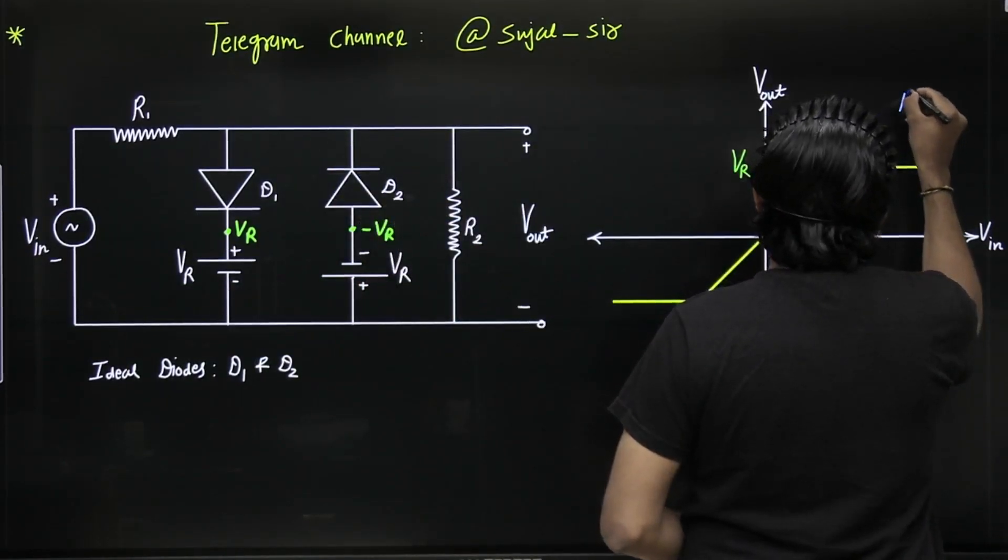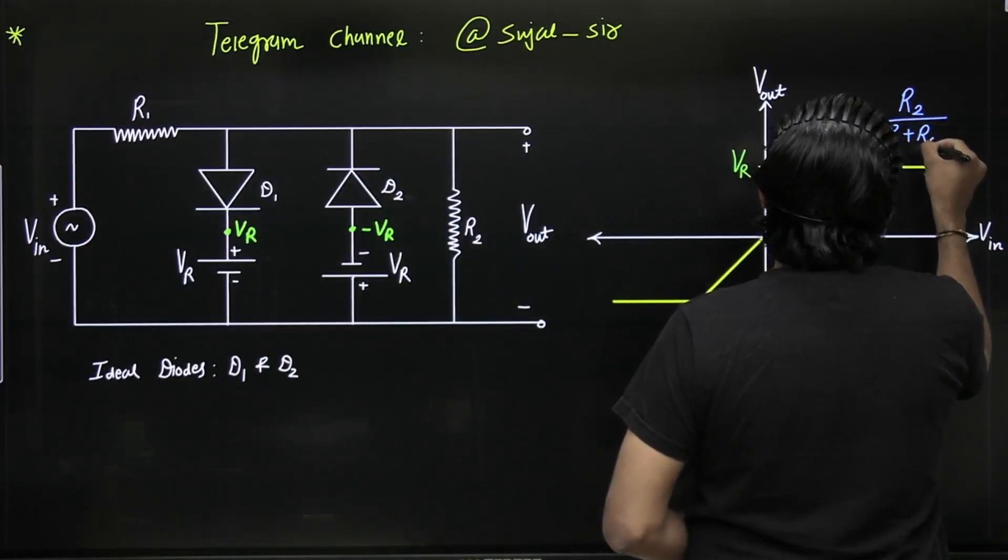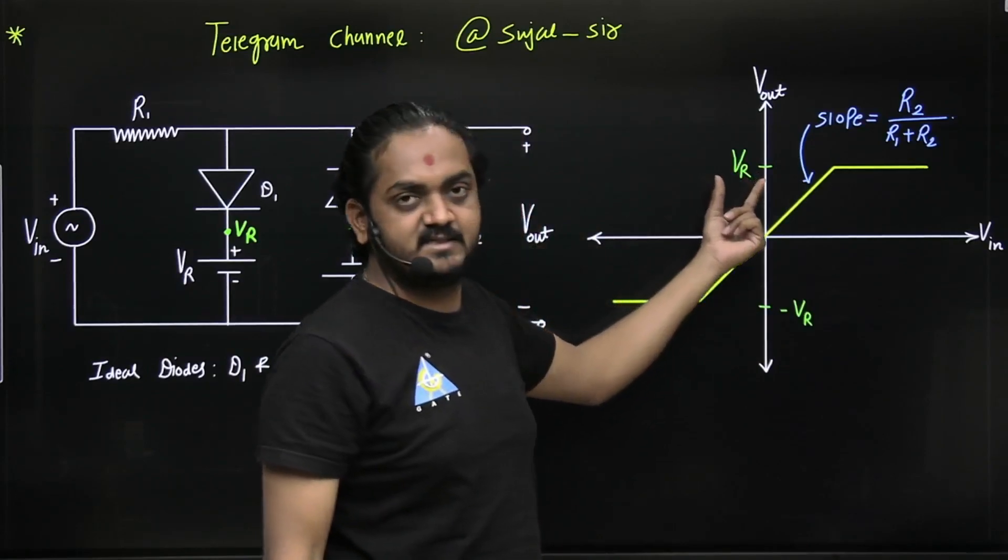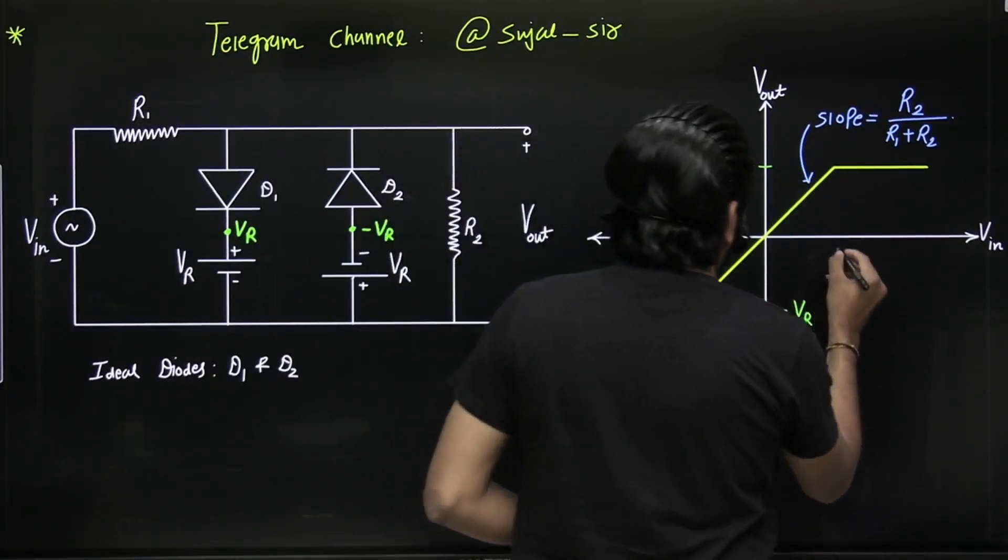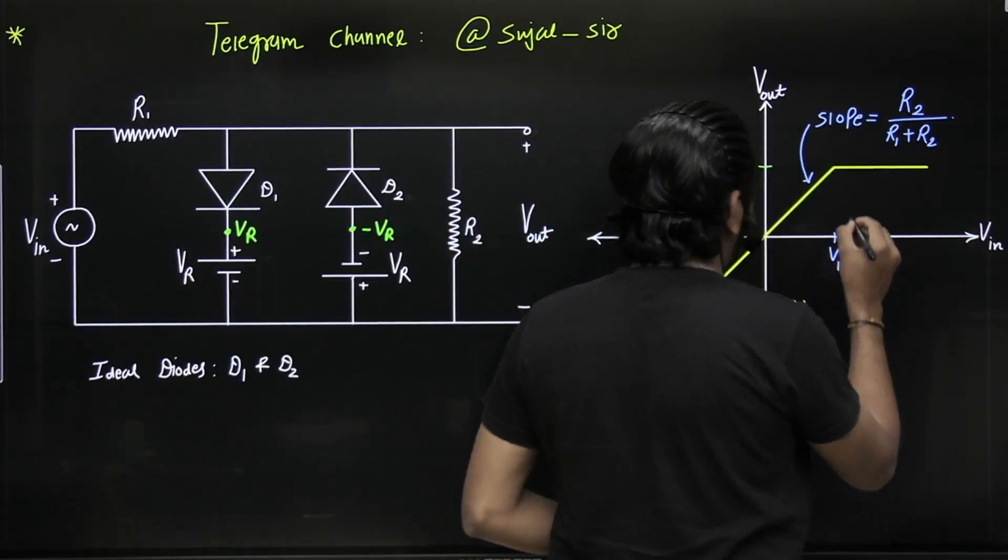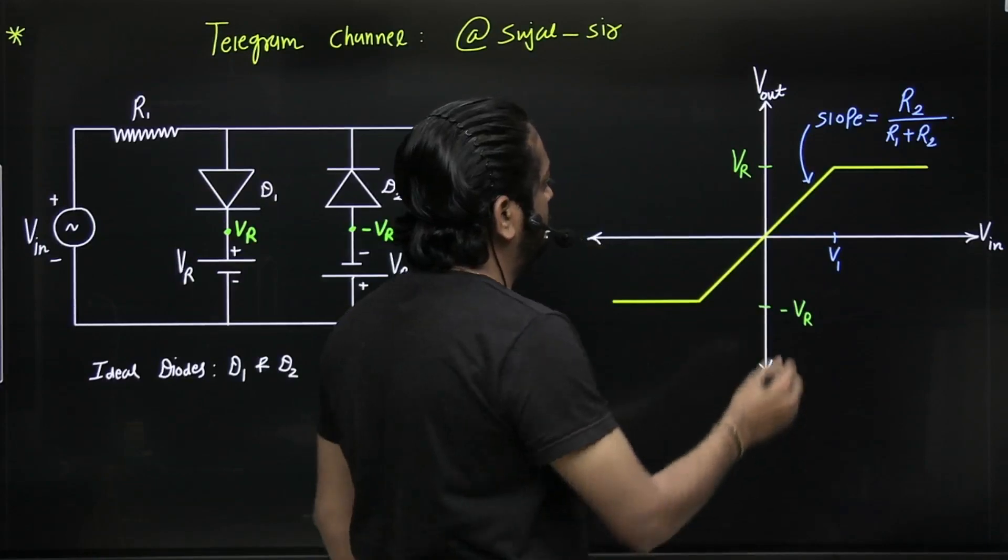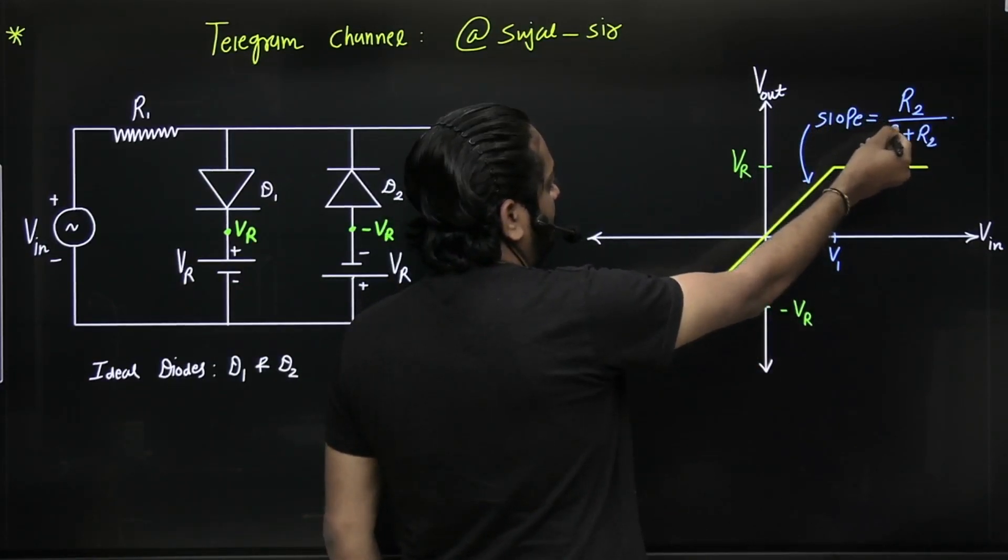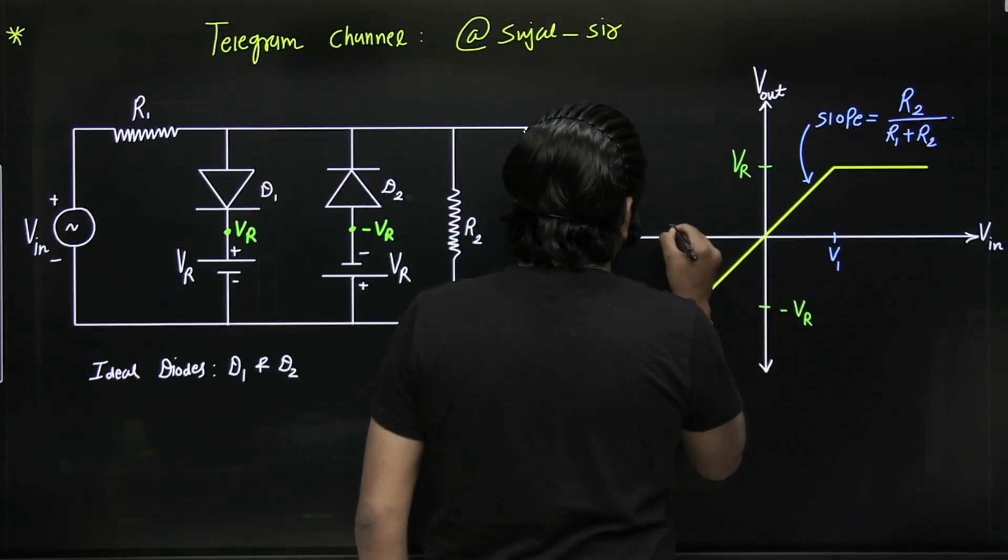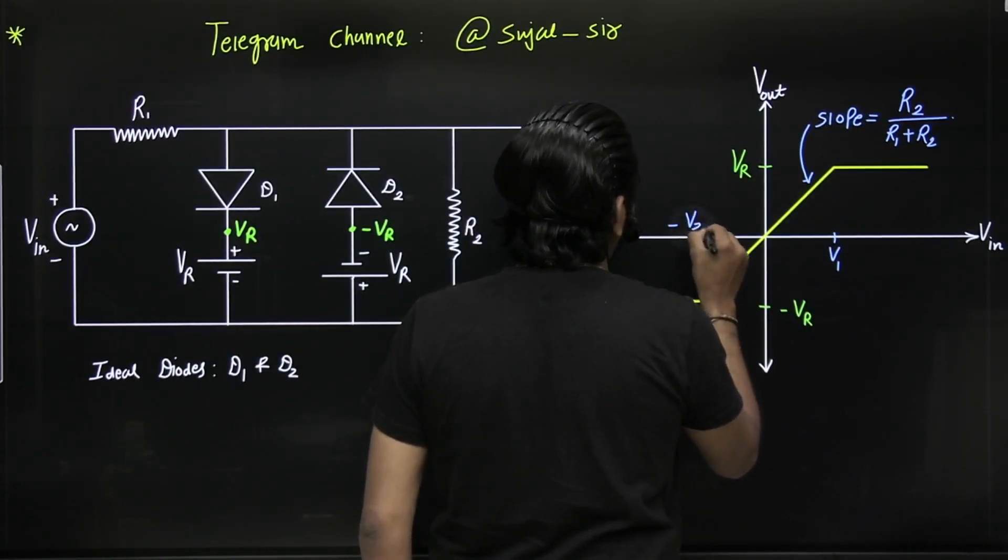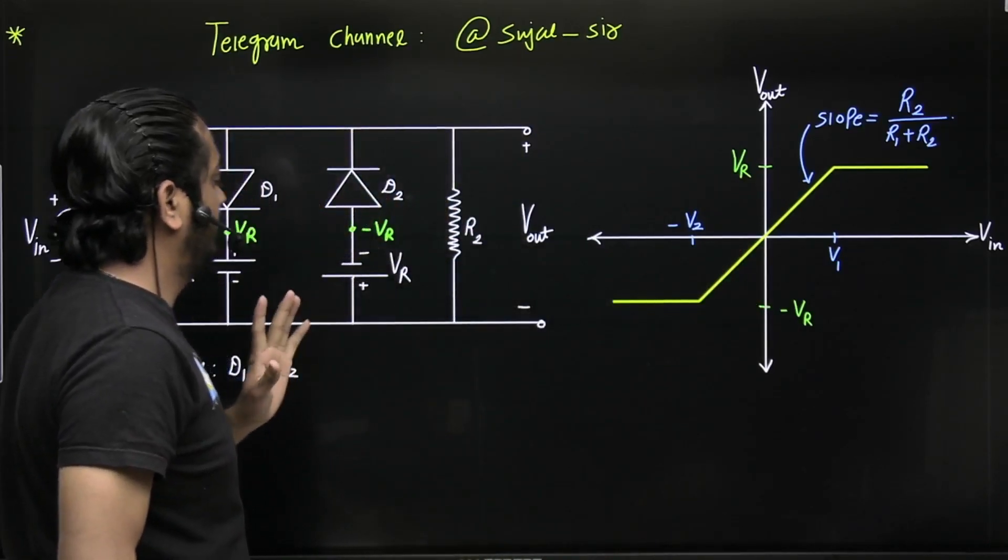A simple voltage divider: R2 divided by R1 plus R2. Now you got the value of the y-axis from these batteries, you got the slope, so of course you can get the value of the x-axis. Slope equals dy/dx. So you got the y-axis value, you got the slope, so this x-axis value you can get easily. Suppose this is V2, so V1 and V2 you can get easily.